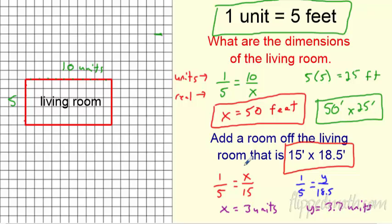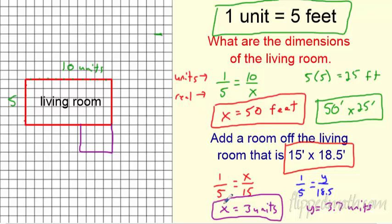So I draw three units one way — that's easy. For 3.7 units, it's one, two, three, and not quite four, so I estimate as best I can. That's it for scale factor, scale drawings, scale models, and map scales. Good luck on the mastery check — peace out!